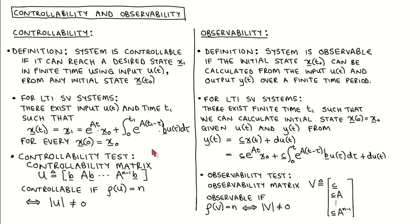It is possible to prove that one can get to this test from this requirement, however we do not prove it in this video. For the controllability test we first construct the controllability matrix, where the left column is given by the vector b, the next column is given by matrix A times vector b, etc. The system is controllable if the rank of the controllability matrix equals the number of states, i.e., it has full rank. This is true if and only if the determinant of the controllability matrix is non-zero.